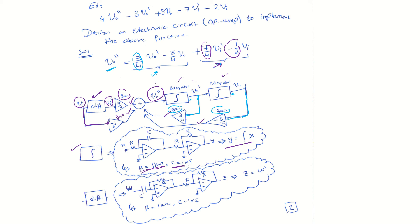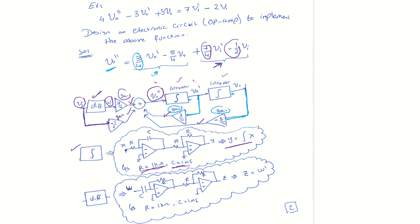For the differentiator, we place C in the input path and R in the output path. The output voltage will be minus RC times the derivative of the input W. To eliminate the negative sign, we add another inverting amplifier with gain of negative 1, so that Z equals W prime — or V input prime. That is the design of the differentiator.